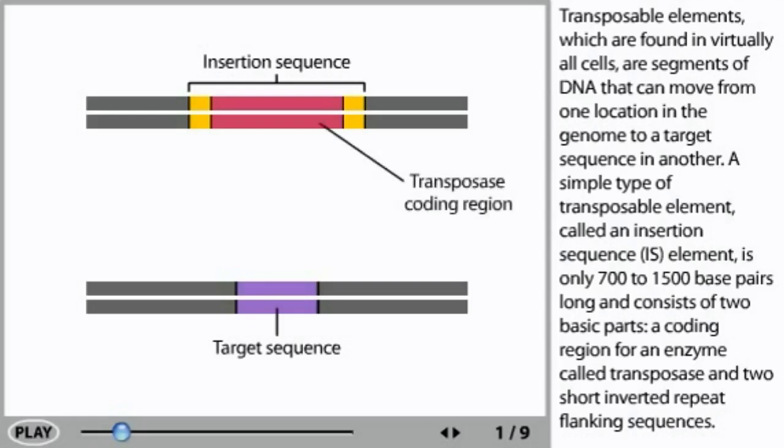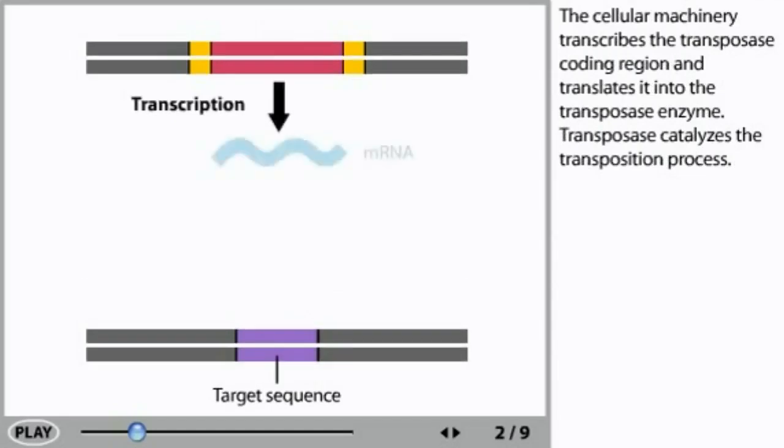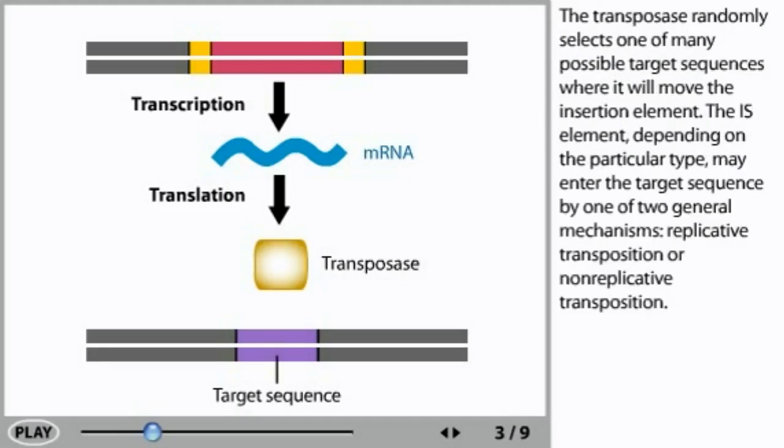A coding region for an enzyme called transposase and two short inverted repeat flanking sequences. The cellular machinery transcribes the transposase coding region and translates it into the transposase enzyme. Transposase catalyzes the transposition process. The transposase randomly selects one of many possible target sequences where it will move the insertion element.